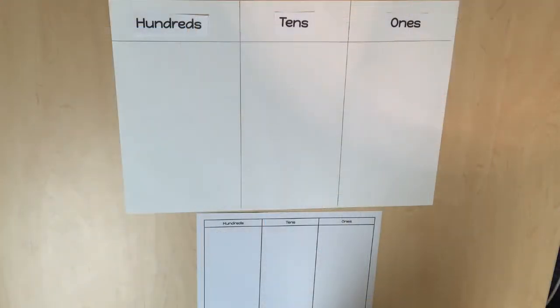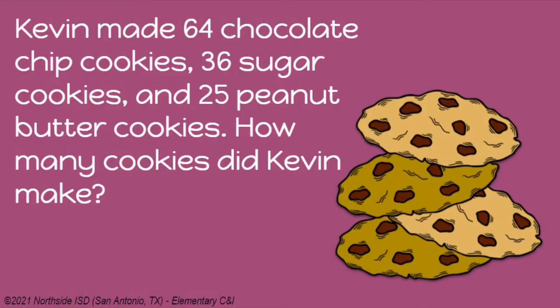Now let's represent all of our parts on one place value map. Present another real-world scenario such as: Kevin made 64 chocolate chip cookies, 36 sugar cookies, and 25 peanut butter cookies. How many cookies did Kevin make?